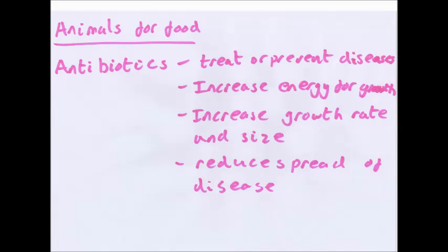For animals for food, the main way of helping animals is antibiotics. These treat or prevent diseases caused by bacteria. If an animal such as a cow gets a bacterial disease, it uses up energy fighting it off. With antibiotics, more energy is available for growth, giving increased growth rate and increased size. Antibiotics also reduce the spread of disease, so it's less likely to kill more animals. Antibiotics can also promote the growth of animals by influencing bacteria in the animal's gut, allowing them to digest food more efficiently.